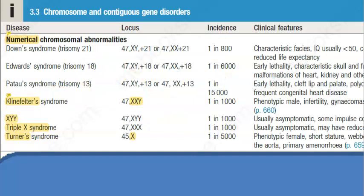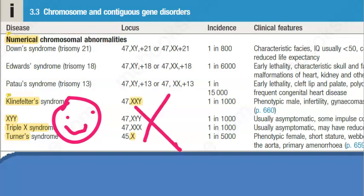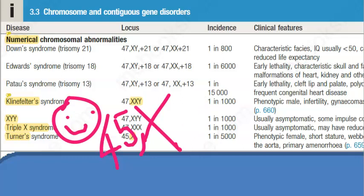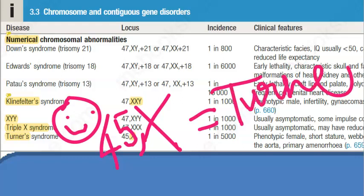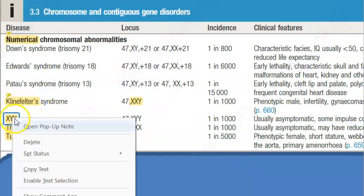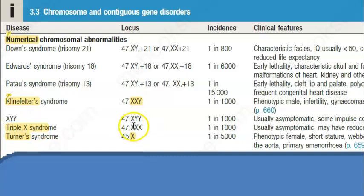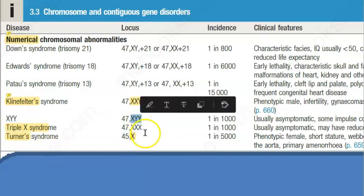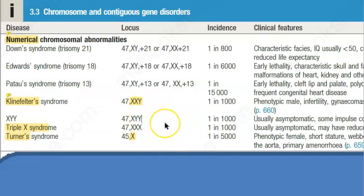Turner syndrome is a female who has only one X chromosome — written as 45,X. She is a phenotypic female with primary amenorrhea and is infertile. Triple X is sometimes called 'super female' and XYY sounds like a 'super male' — though those are informal names, not from the textbook.